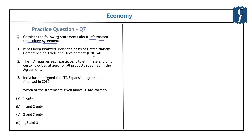The practice question on the Information Technology Agreement states: first, it was finalized under the aegis of UNCTAD; second, the ITA requires each participant to eliminate and bind customs duties at zero for all products specified in the agreement; third, India has not signed the ITA expansion agreement finalized in 2015. The ITA was finalized in 1996 after the formation of WTO, hence it was finalized under the aegis of WTO — not UNCTAD. The first statement is incorrect, and options A, B and D can be eliminated.